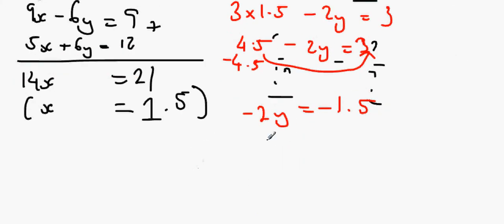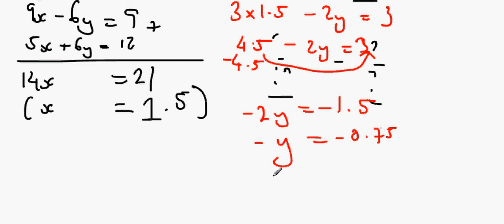And here's a handy trick in maths: to make anything go from negative to positive, just remove the minus sign. So y equals 0.75.